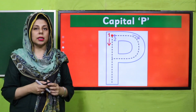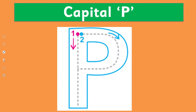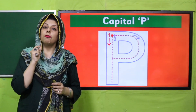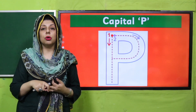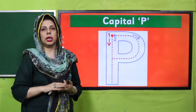Ab P ki writing kaise karti hai, dhyan se dekho. You follow the arrows from number 1 — we go down a standing line, and then we come back up here for the second stroke and follow number 2 and the arrows and make the face of the sound P, yani the letter P. Jub aap aise kisi sound ke baare mein focus karenge ke is sound se aur kaun kaun si chizein banti hain, toh aapke zehen pe aur bhi bohot saare alfaz aa jaenge.